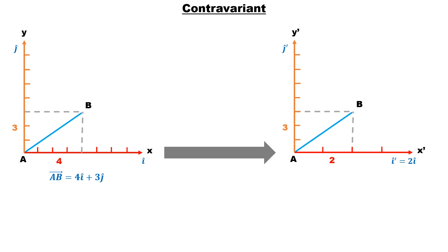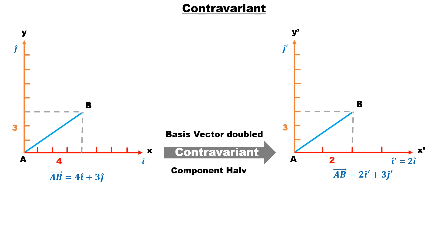So in the new coordinate system, vector AB will be equal to 2i-cap prime plus 3j-cap prime. The basis vector is doubled and its corresponding component is halved, but the overall vector is the same. This transformation is called contravariant transformation. On transforming a tensor from one coordinate to another, if the component decreases as the basis vector increases, such a tensor is called a contravariant tensor. Contravariant means to transform in the opposite manner to each other.